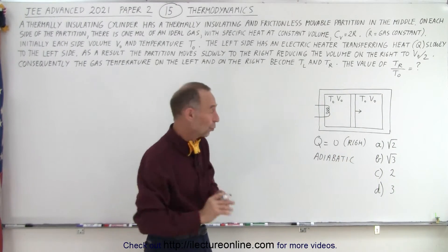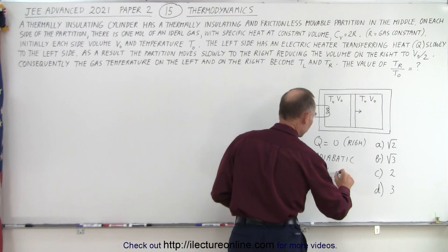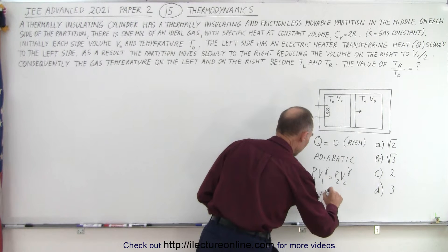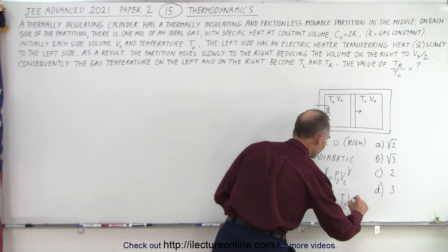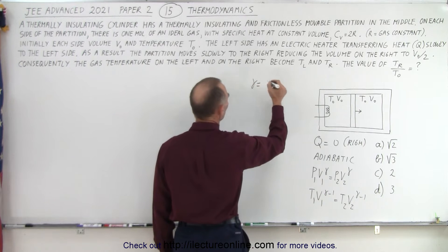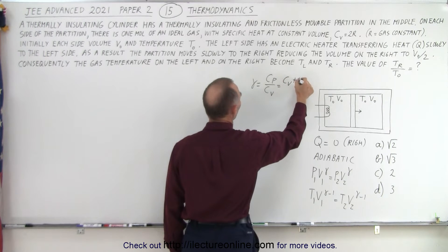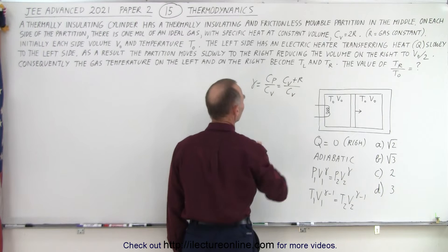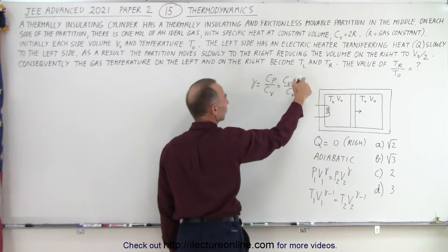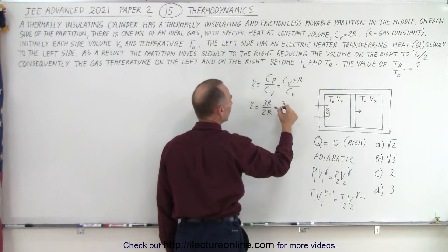With an adiabatic process, you need to know two equations: P1·V1^γ = P2·V2^γ, and T1·V1^(γ−1) = T2·V2^(γ−1). Recall that gamma is equal to C_P over C_V, and C_P equals C_V plus R. They gave us C_V = 2R, so the numerator becomes 2R + R = 3R. Therefore gamma equals 3R divided by 2R, which is 3/2. That means the exponent (γ−1) equals 0.5.